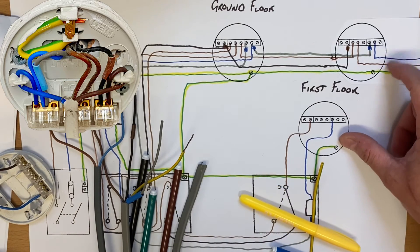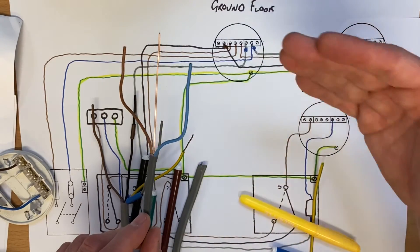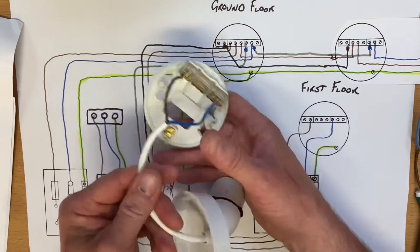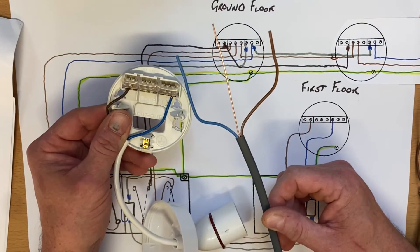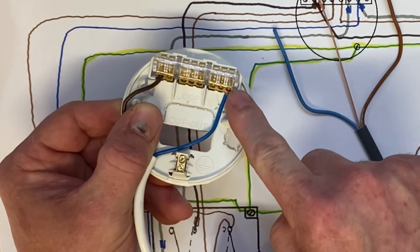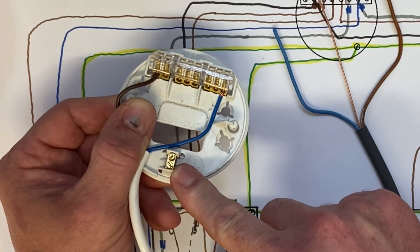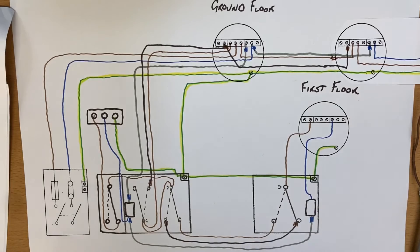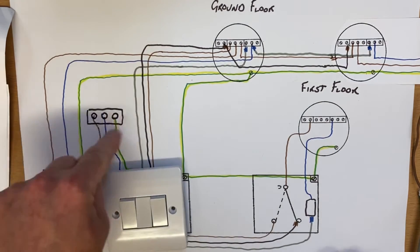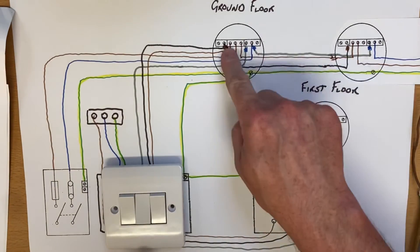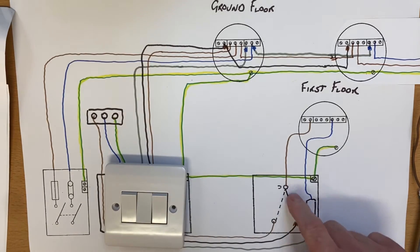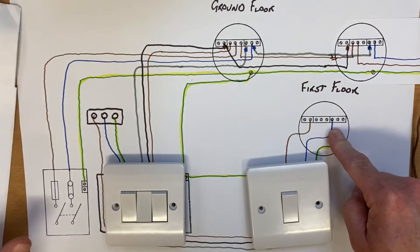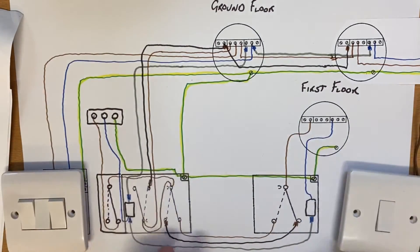So that cable goes off into the next room, and we can carry the three plate method on in that area. The twin and CPC or twin and earth cable brings the permanent line into loop, the neutral into the neutral connection, and the CPC into the back terminals — then you carry the process on and take a cable down to the switch, which we've seen many times. So pulling back — we've got a three-gang switch: an outside light, this one that turns on two ground floor lights, and this one which is two-way with the upstairs first floor landing light.